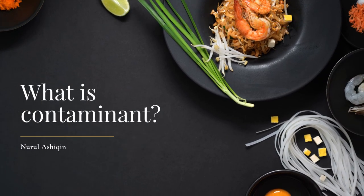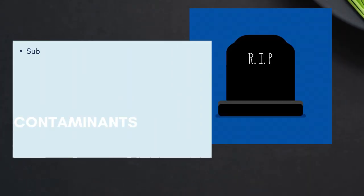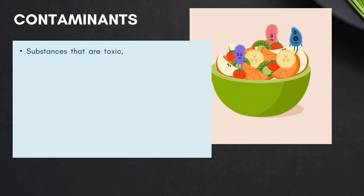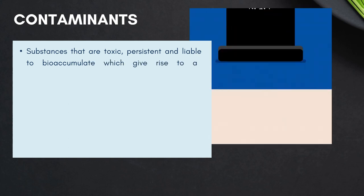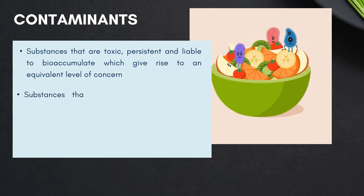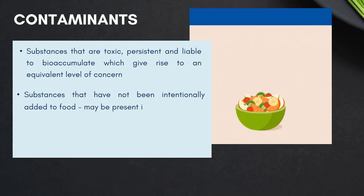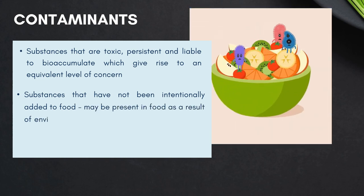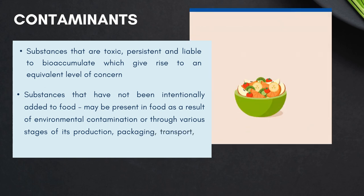What are contaminants? Contaminants are substances that are toxic, persistent, and liable to bioaccumulate, which give rise to an equivalent level of concern. They are also substances that have not been intentionally added to food and may be present in food as a result of environmental contamination or through various stages of its production, packaging, transport, or holding.